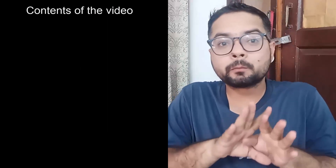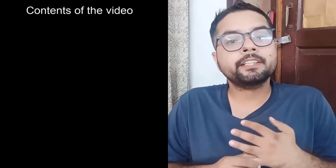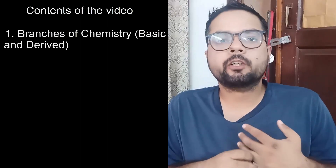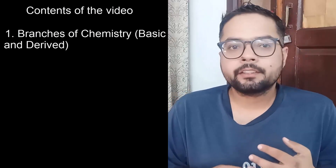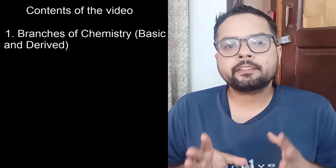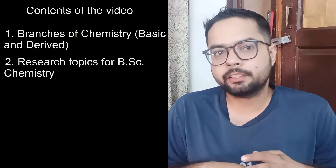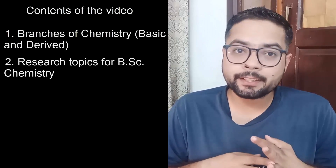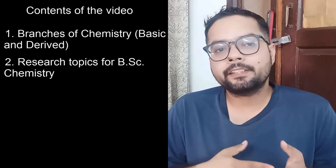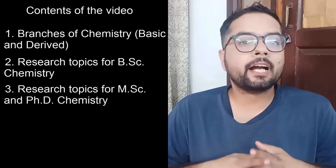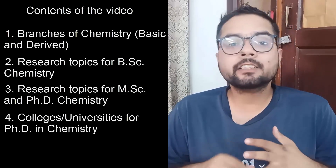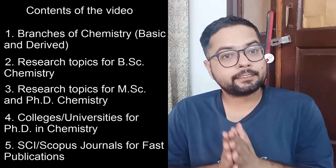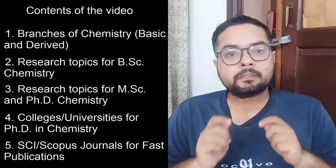In today's video I will cover many things. First, we will talk about the various branches of chemistry — the basic branches and the derived branches. Then I will give you basic topics for BSc in Chemistry, followed by topics for MSc or PhD in Chemistry. After that, I will tell you about the institutes from where you can do your PhD in Chemistry, and finally the basic Scopus and SCI indexed journals where you can try to publish your papers.